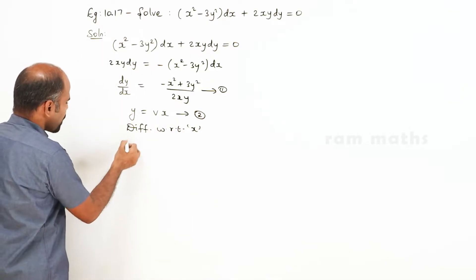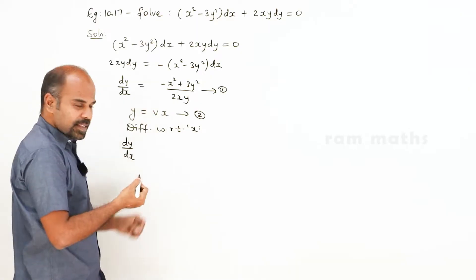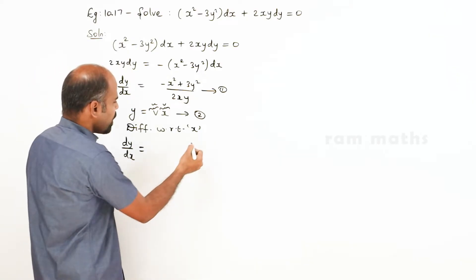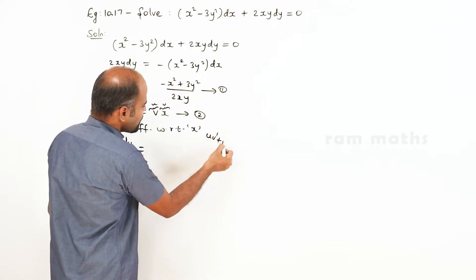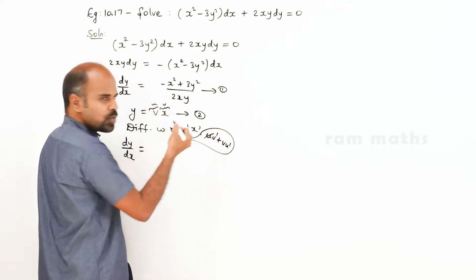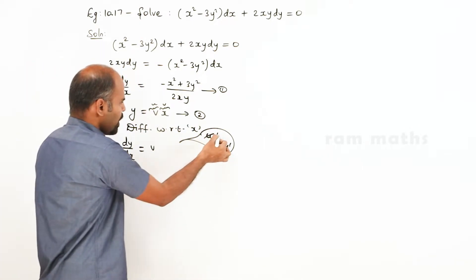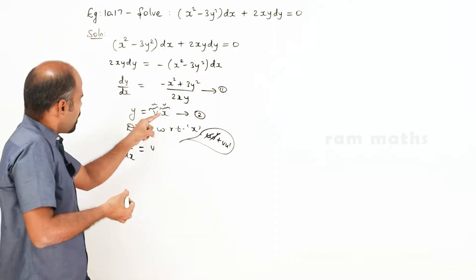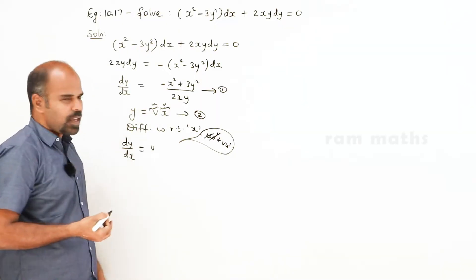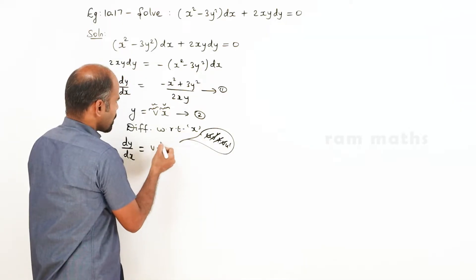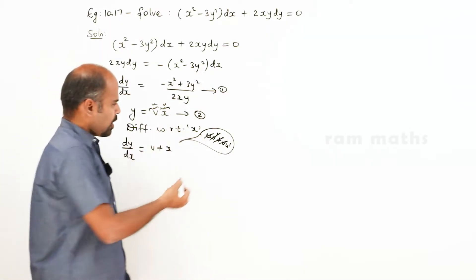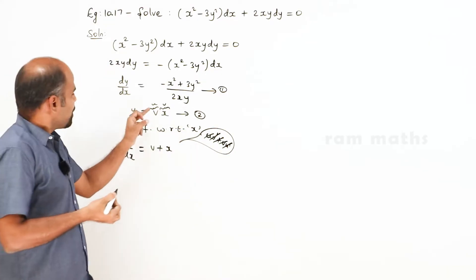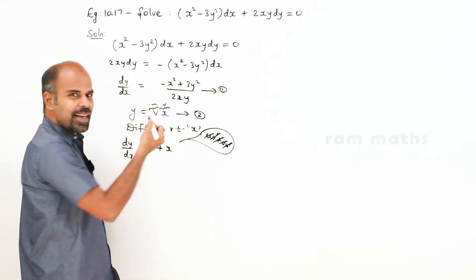dy/dx equals — if we apply the uv method, using the uv formula: uv dash plus v u dash. Here u is v, v dash is v differentiated. v is x, so that variable differentiates to 1. Applying the product rule gives dv/dx.